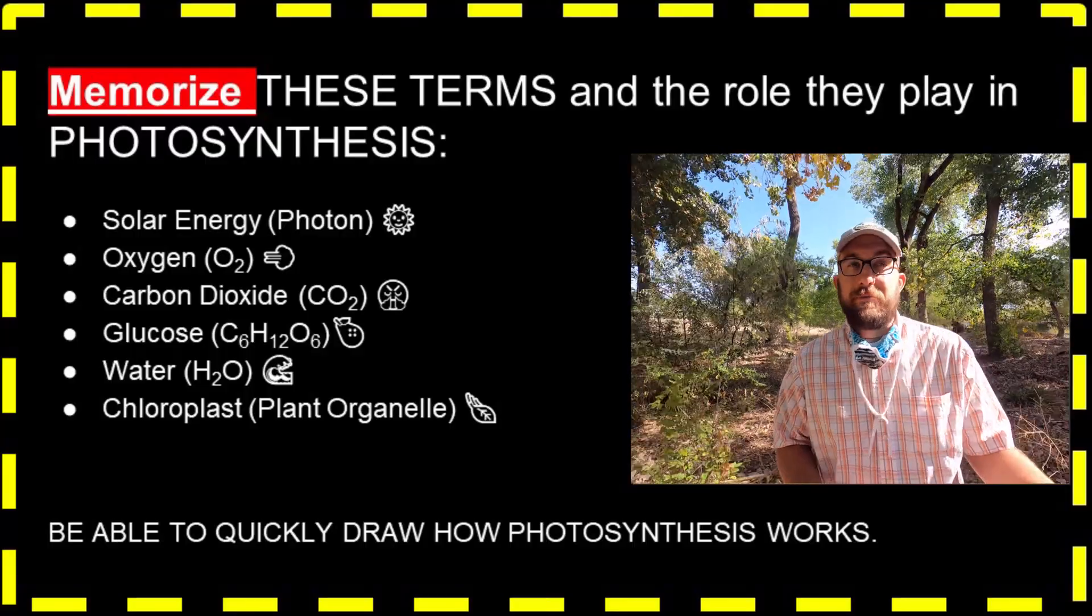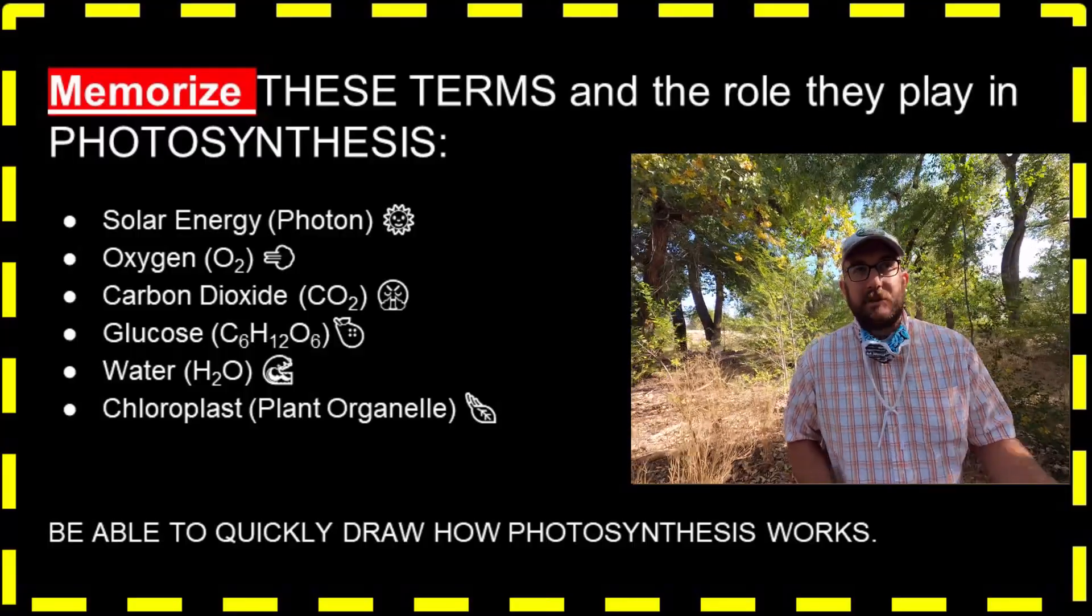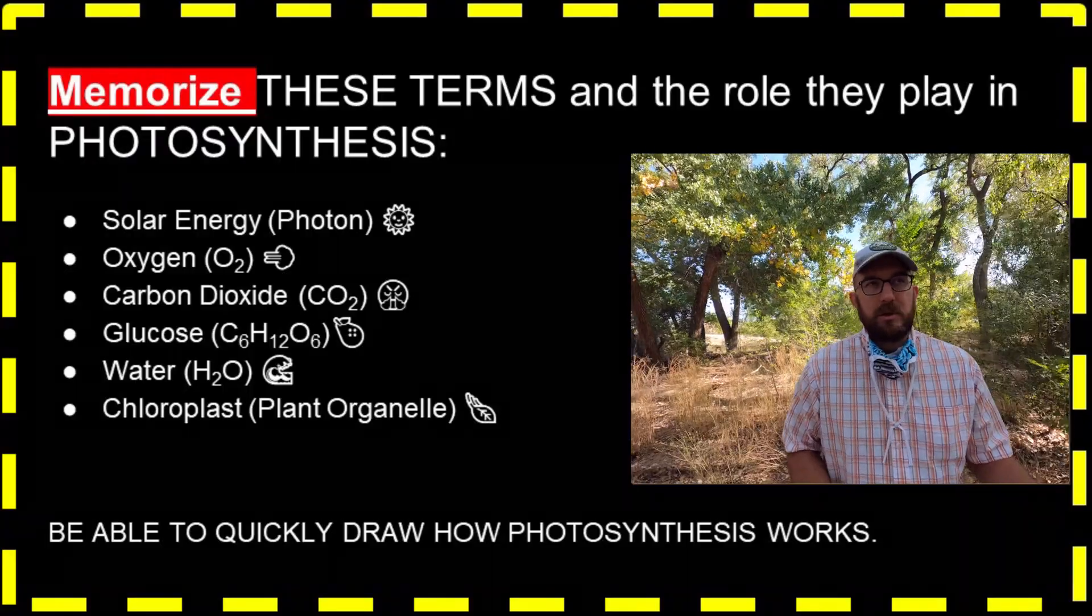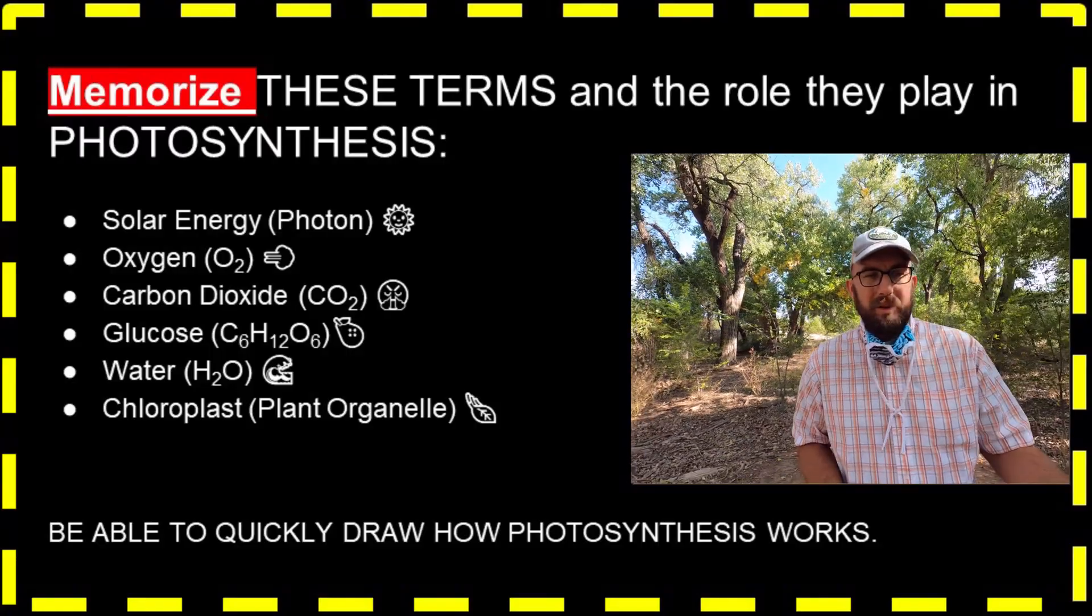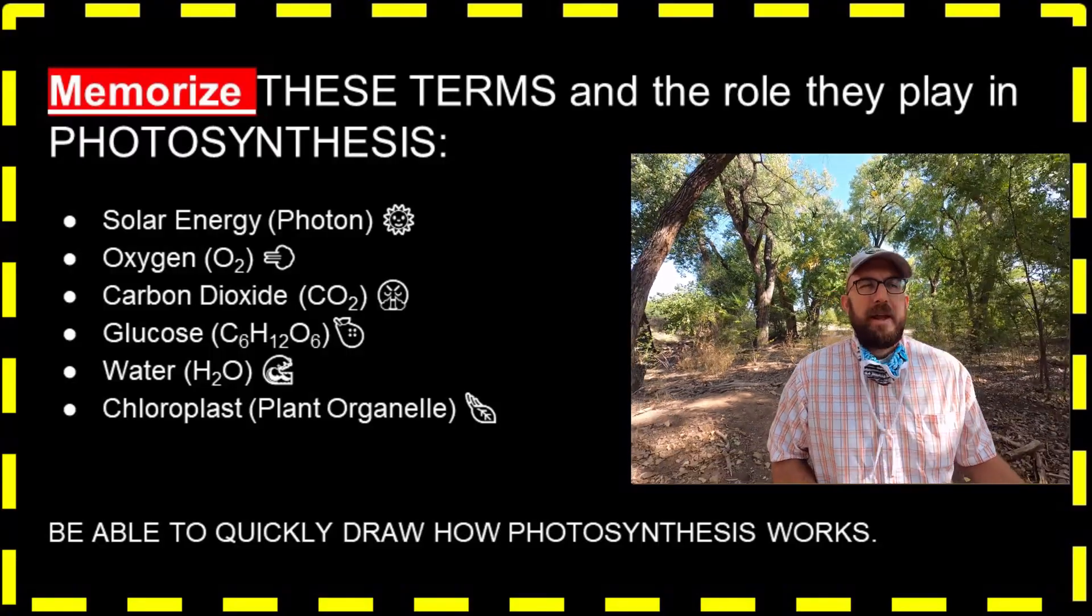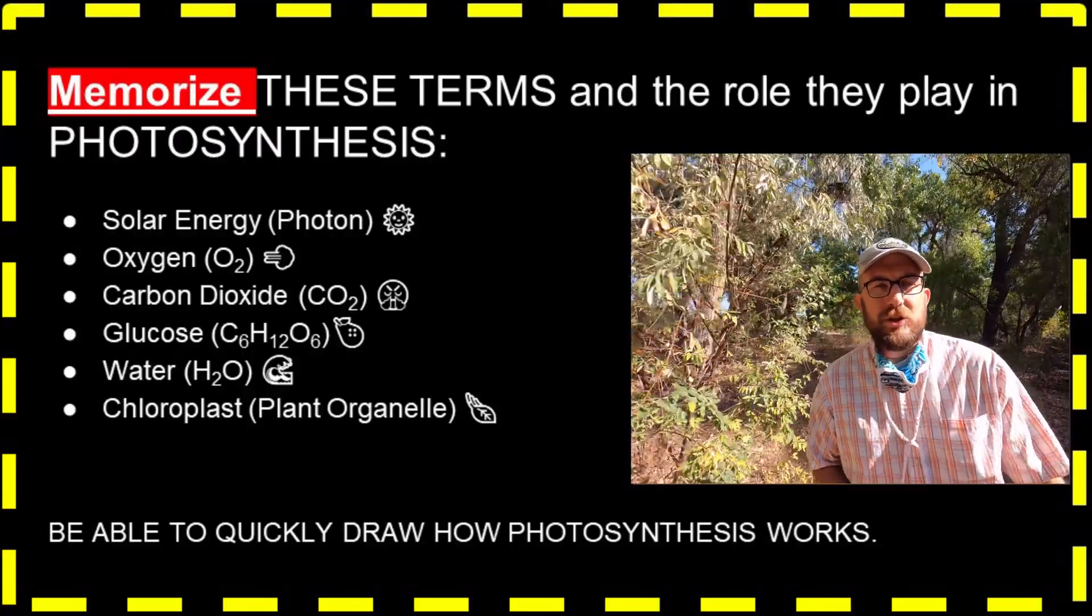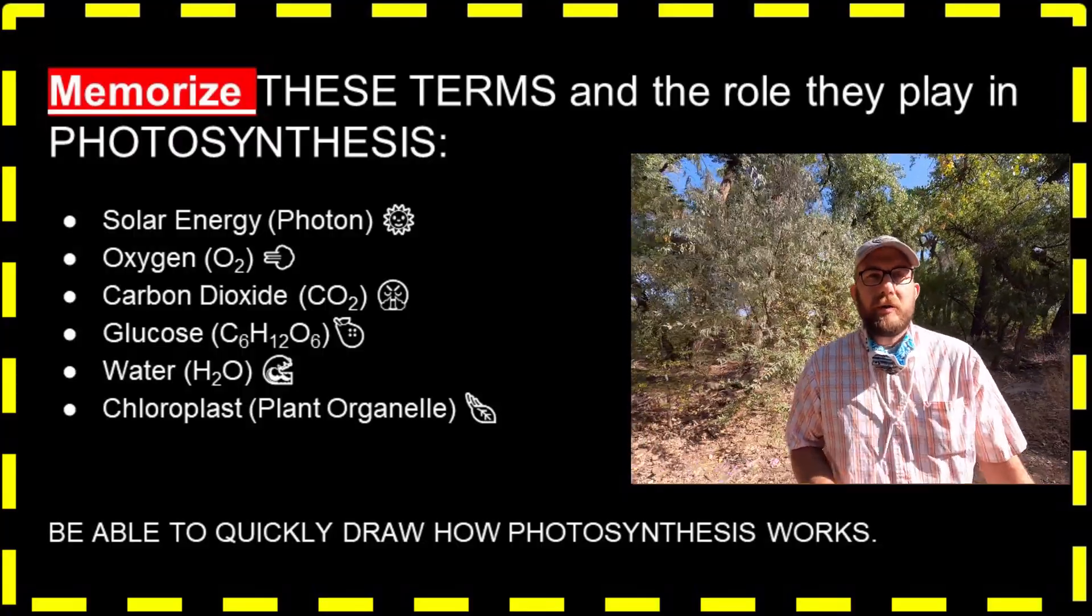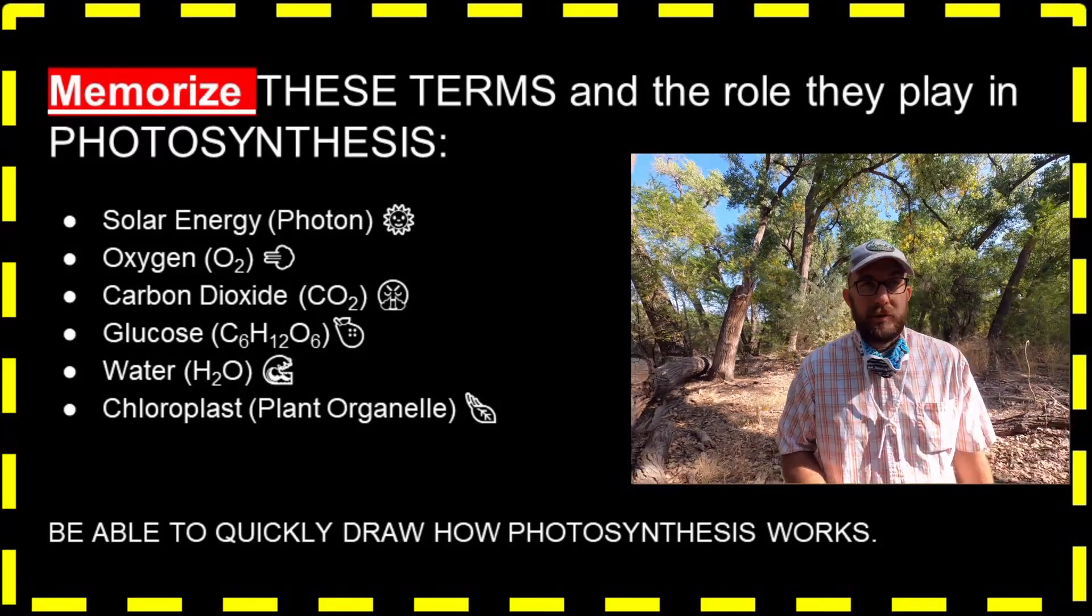So solar energy or photon, oxygen or O2, carbon dioxide or CO2, glucose or C6H12O6, water or H2O, and chloroplast, which is a plant organelle, use all of those terms in an illustration, a drawing. It can be very simple of photosynthesis. So I want you to be able to do that. So make sure you can. Food is good.